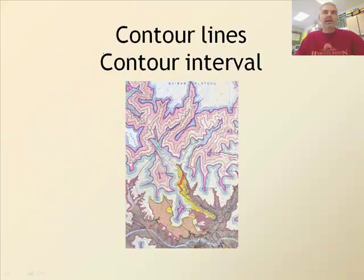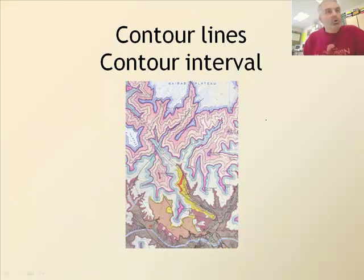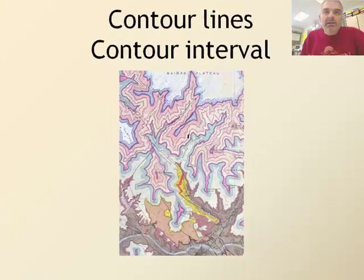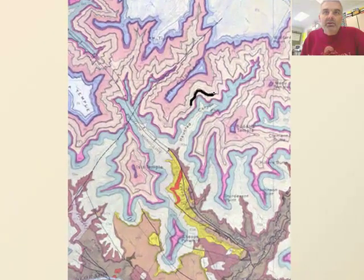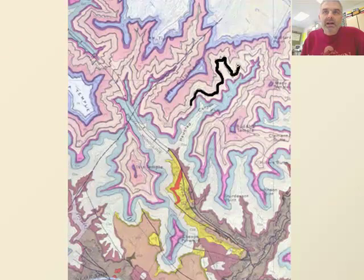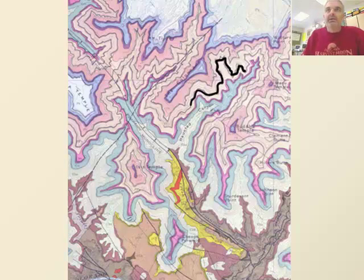Let's start with a contour line. What's a contour line? So what I have here is a topographic map. The contour lines, if you see here, are lines of equal elevation. If we look at this line that I'm tracing, this is a line of equal elevation on a topographic map. That's a contour line.